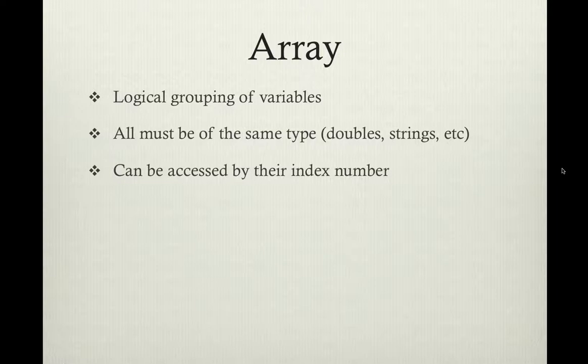An array is a logical grouping of variables. The important thing is that all of the variables in an array have to be of the same type of data. In other words, you can't have an array that holds strings and doubles and ints. When you declare an array in a normal programming language, you will typically tell the program what kind of data you're going to store — an array of integers, an array of doubles. You can also store an array of objects, and typically in Alice we are actually working with an array of objects.